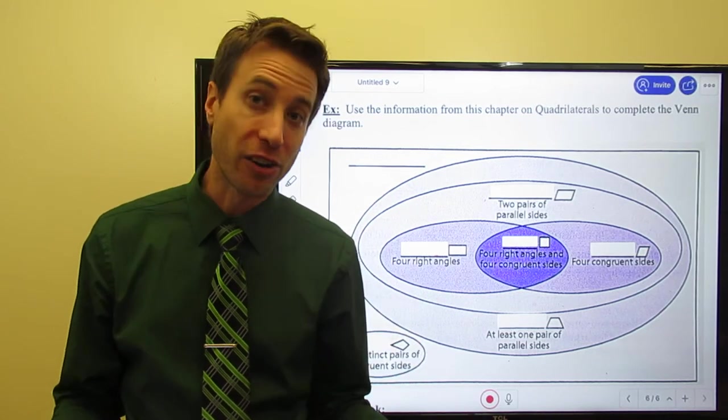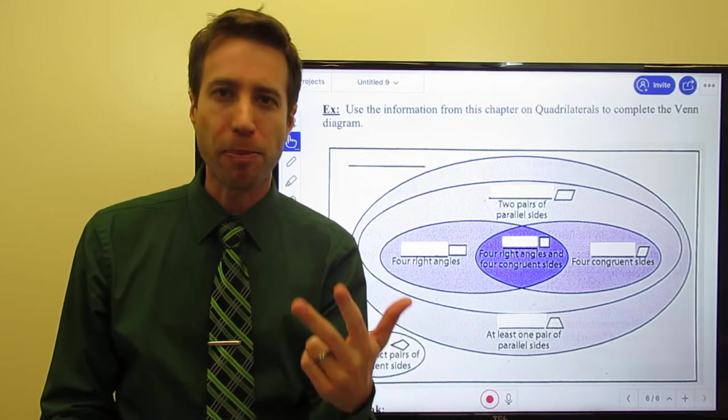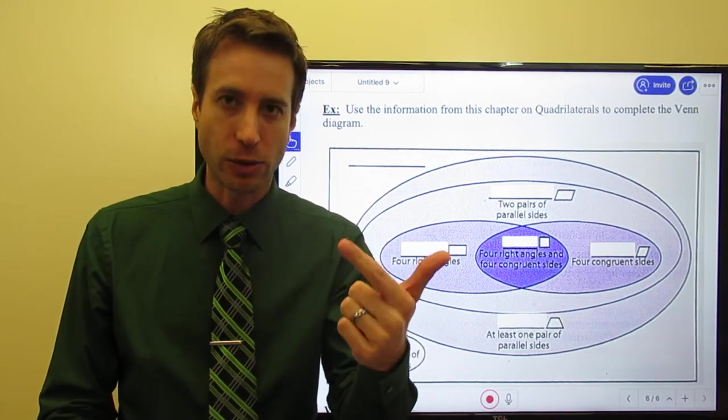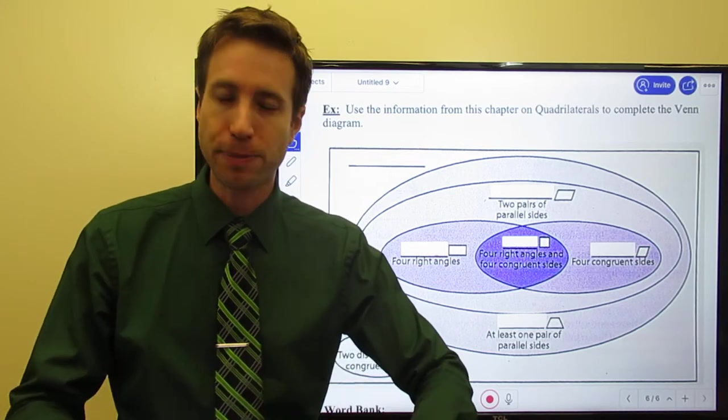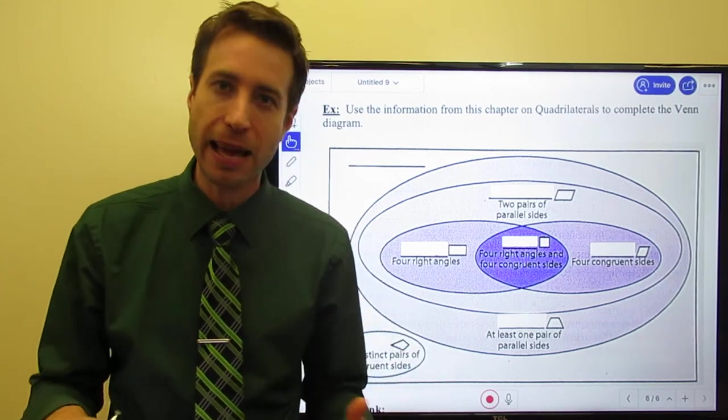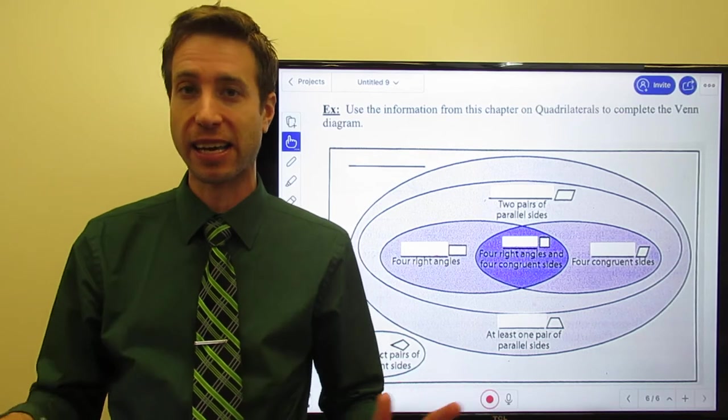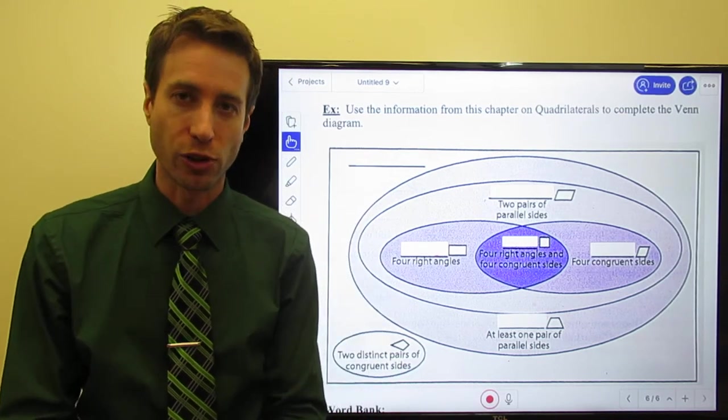In particular, we talked about some parallelograms which are rectangles, rhombuses, and squares and the properties that go with those three figures. Then we talked about two other shapes which both are quadrilaterals, one which is a kite that is not a parallelogram whatsoever, really has nothing in common with parallelograms at all, it's just simply a quadrilateral.